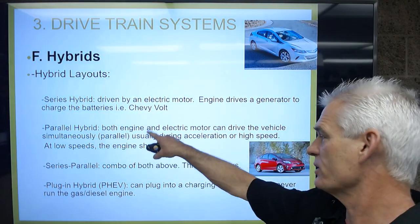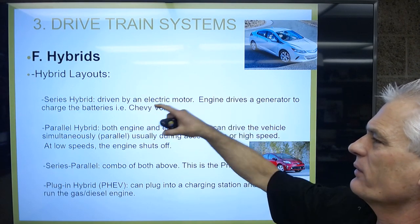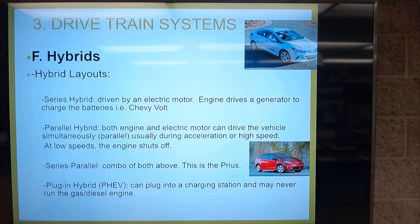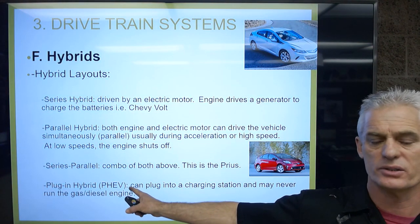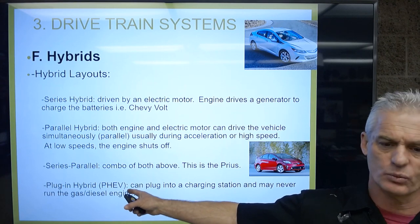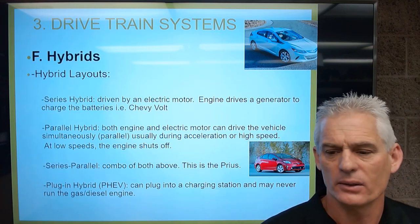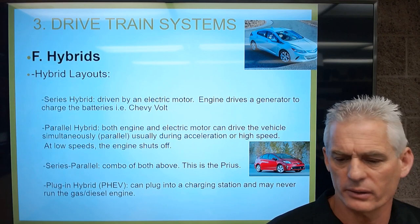A series-parallel hybrid is a combination of both — that's the Prius — meaning the engine can drive the generator to charge the batteries, but you can also drive the vehicle with either the engine or the electric motor. A plug-in hybrid (PHEV) can be plugged into a charging station and may never run the gas or diesel engine. We depend on a charging station to charge the batteries rather than the gas engine, though the gas engine could charge the batteries. Most Priuses cannot be plugged in, but plug-in hybrids can be charged while parked at work or school.